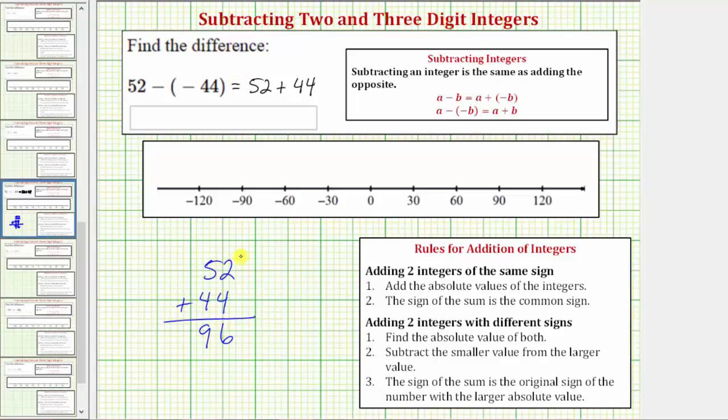52 plus 44 equals positive 96, and so does 52 minus negative 44.